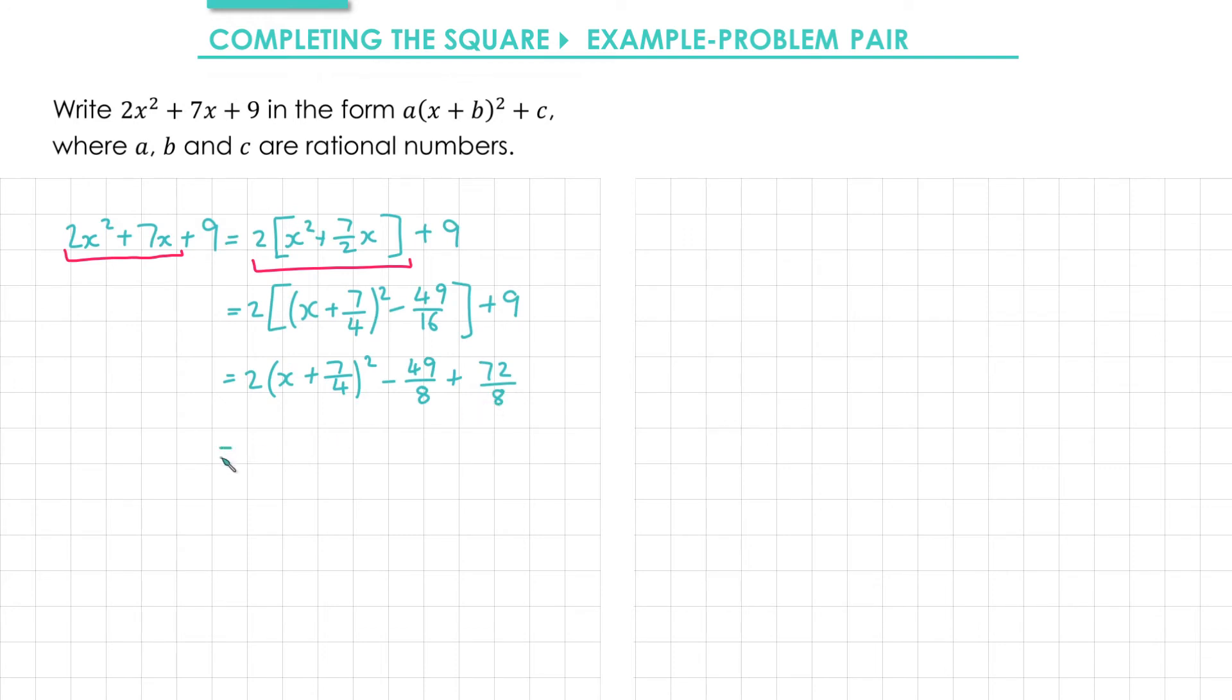Finally I'll just tidy up and simplify. The first term can stay as it is. And minus 49 over 8 plus 72 over 8 gives me positive 23 over 8.